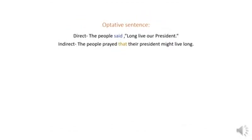Now come to optative sentences. In optative sentences, you can write down 'pray' or 'wish' instead of the reporting verb, and instead of the inverted comma, you can write down 'that.' Look at the example: The people said, 'Long live our president.' Indirect: The people prayed that their president might live long.